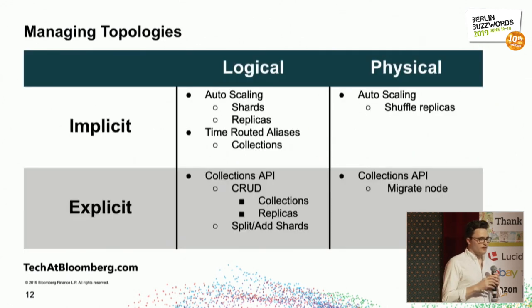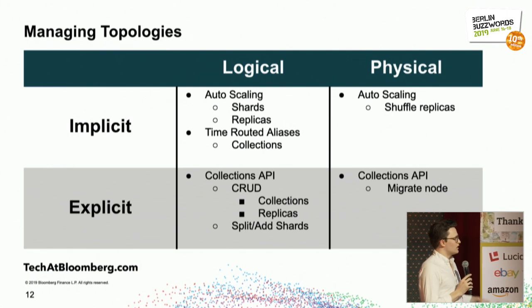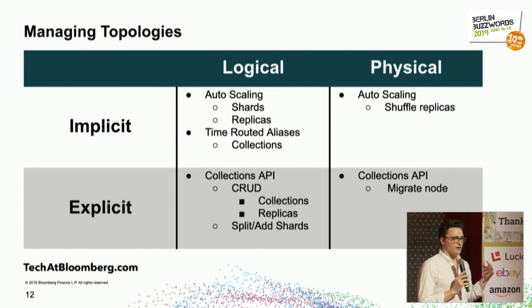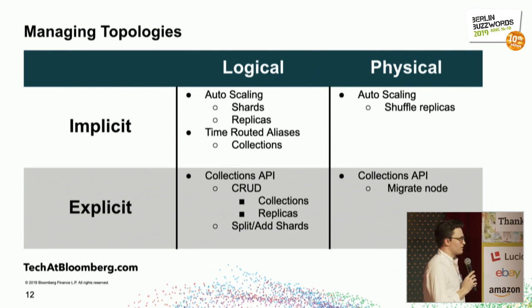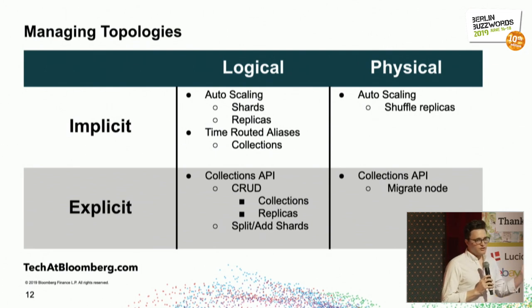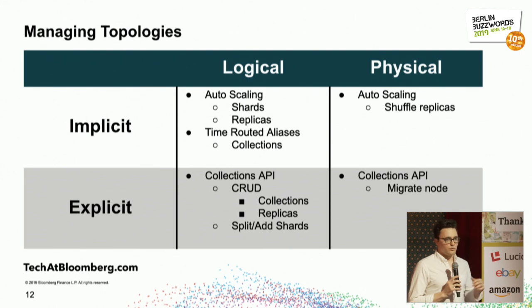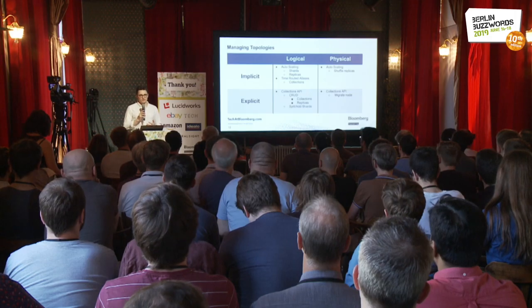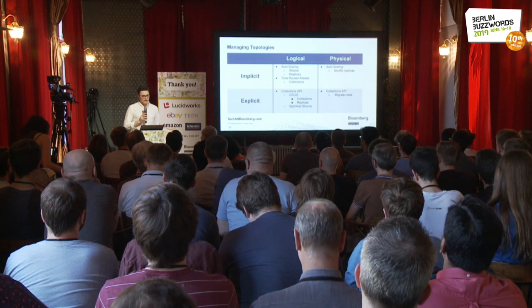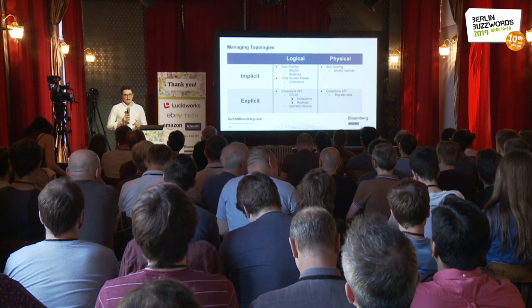These topologies are managed in very different ways. The logical topology has a much better set of defined APIs and commands within Solr that let you manage it; the physical is a little lacking. With the logical topology you get a lot of implicit features in Solr — through the autoscaling component, which lets you add or remove replicas based on load and other things.